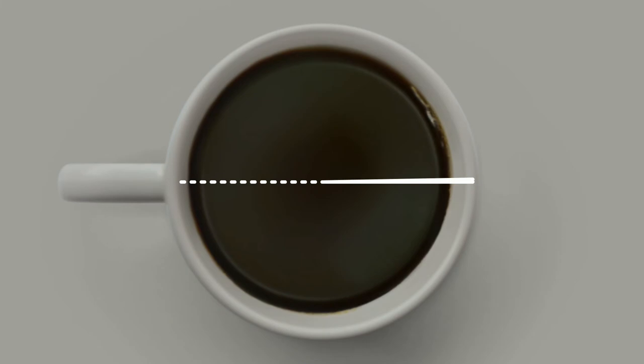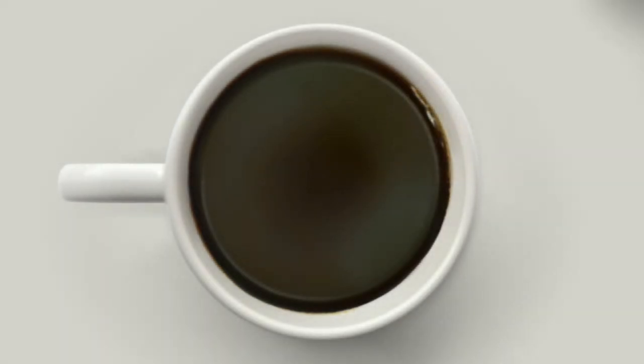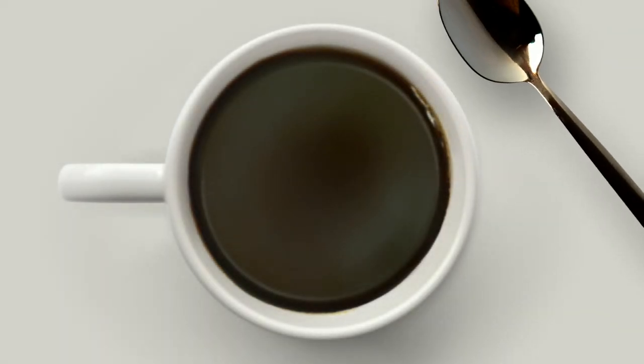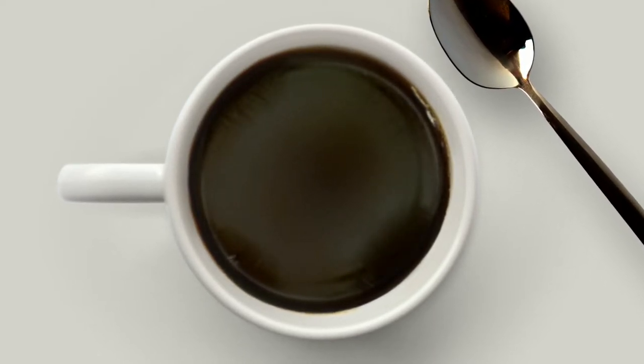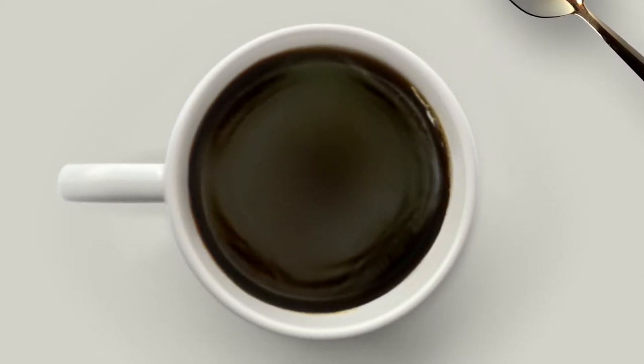Let us now strike the cup 45 degrees from that position. What will happen on the surface of the coffee? Again, a standing wave with four antinodes forms. However, we can clearly see that the node is located at the handle.